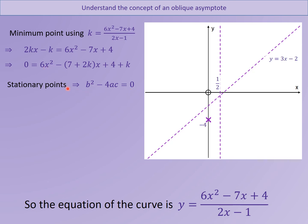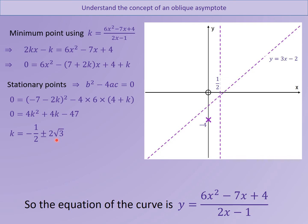Substituting in: A equals 6, B equals minus (7 plus 2K), C equals (4 plus K). Setting b squared minus 4ac equal to 0, I end up with 4K squared plus 4K minus 47 equals 0. I can get my K value as the rather unpleasant minus a half plus or minus 2 root 3. That's how high the horizontal line needs to be for the turning point. I'll calculate it in my calculator to get the decimal K value, and then work out the x values by substituting back into the quadratic.